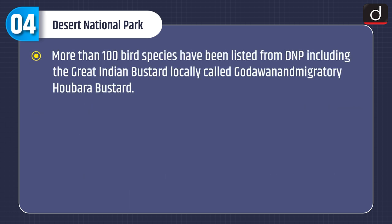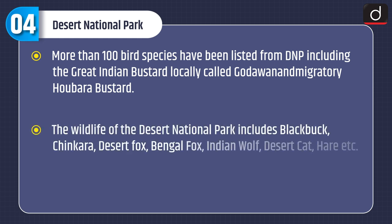More than 100 bird species have been listed from DNP, including the Great Indian Bustard, locally called Godawan, and the migratory Houbara Bustard. The wildlife of the Desert National Park includes blackbuck, chinkara, desert fox, Bengal fox, Indian wolf, desert cat, hare, etc.